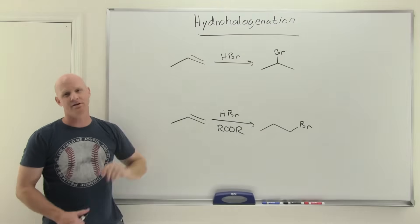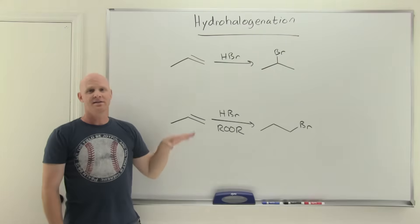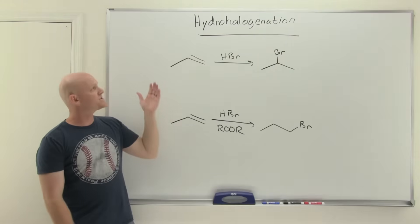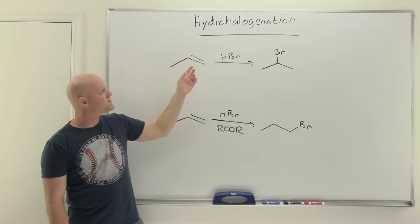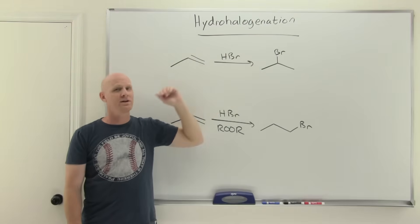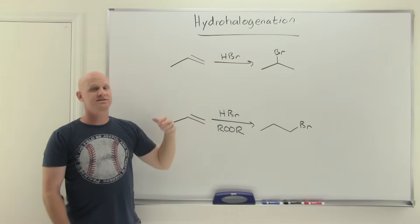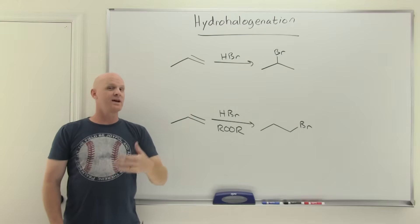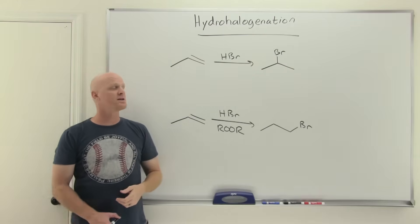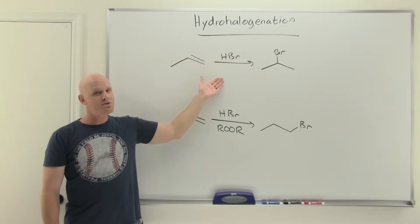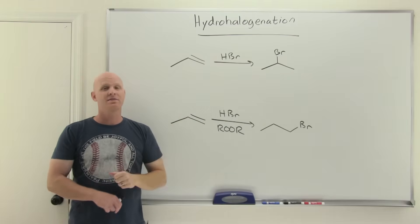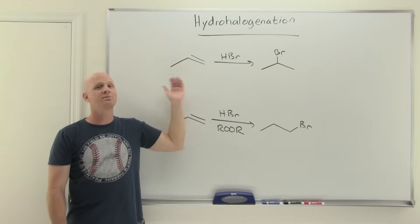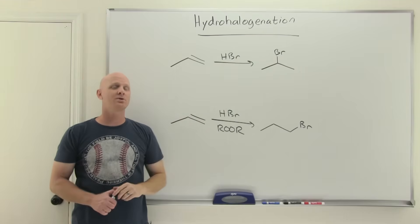Hydrohalogenation is the topic of this lesson — the first in a series of alkene addition reactions. For standard hydrohalogenation, you add a hydrogen and a halogen across an alkene, using HCl, HBr, or HI as your reagent, adding an H and Cl, H and Br, or H and I. It is Markovnikov addition, with no stereoselectivity, and it goes through a carbocation intermediate, making it subject to carbocation rearrangements in certain cases.